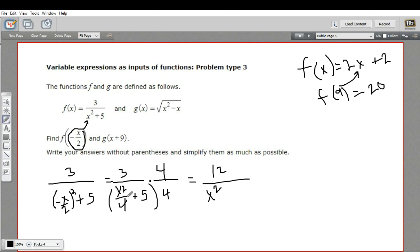And then of course I have to do this to the second term here, so 4 times 5 would be 20. And I think that is as simple as that one gets. So f of negative x over 2 is 12 over x squared plus 20.